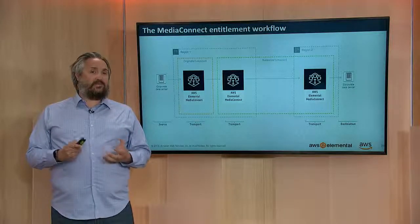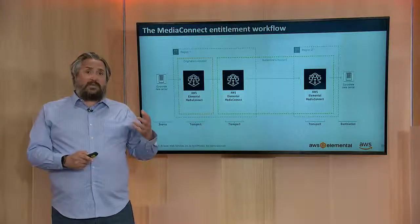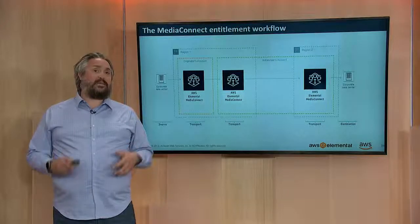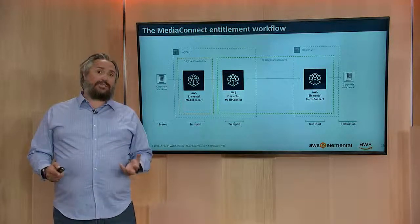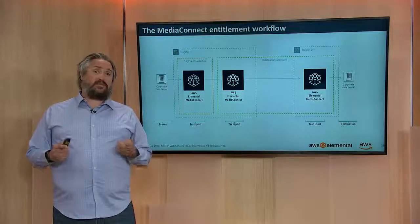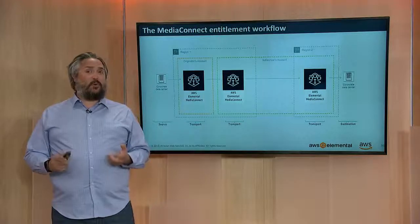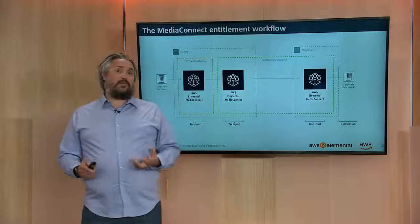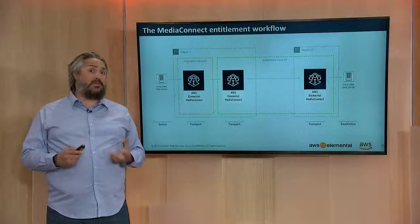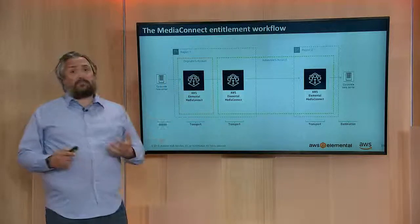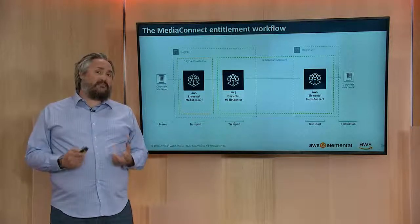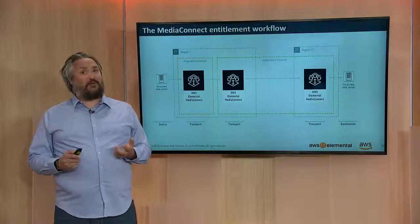There are a couple of important things to say about this workflow. Number one is the whole temporal decoupling. The owner of the content doesn't need to know about IP addresses or ports, or whether the subscriber is even ready to receive the content — they just create that entitlement with the subscriber's AWS account ID. Second, and just as important, there's a very clear boundary drawn around the resources involved in this operation. The orange box represents the originator's, the content owner's infrastructure, and the green box represents the subscriber's infrastructure and responsibility. That box is simply the AWS account boundary, which clearly defines who's responsible for what infrastructure and, just as importantly, who's paying for it as well.